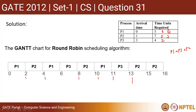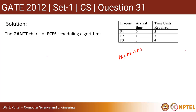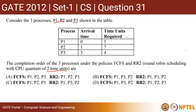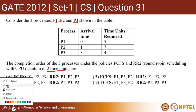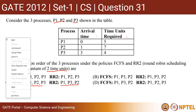So to summarize: for FCFS the completion order is P1, P2, P3 — whatever comes first finishes first. For round robin it is P1, P3, P2. Looking at the options, this matches option C. Thanks for watching.